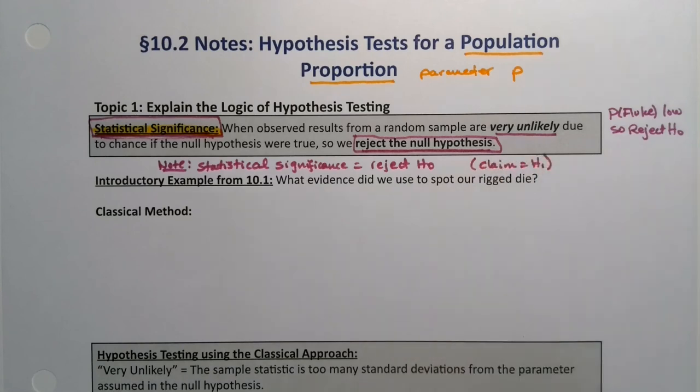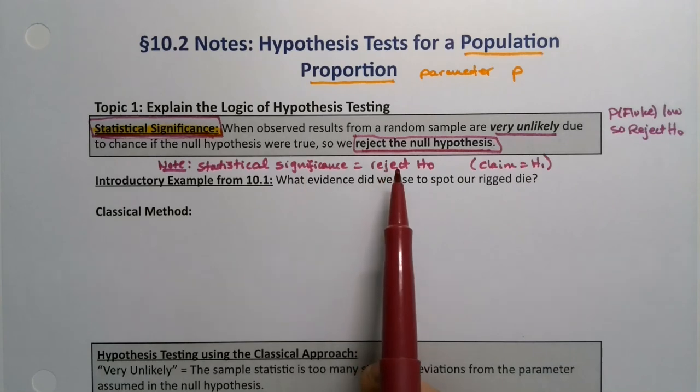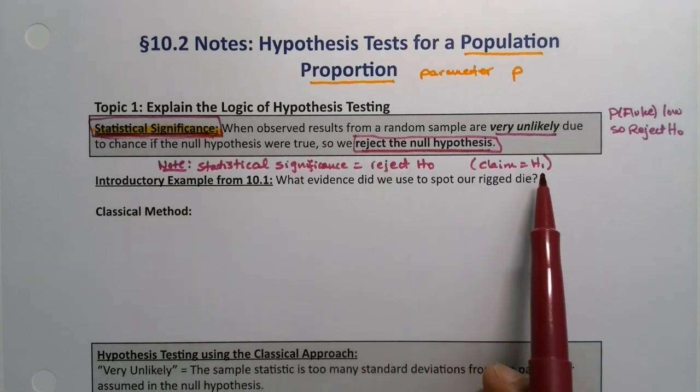It's always what we're trying to prove. So it's statistically significant if we can reject what we thought to be true and go with our claim that we're hoping will be true.